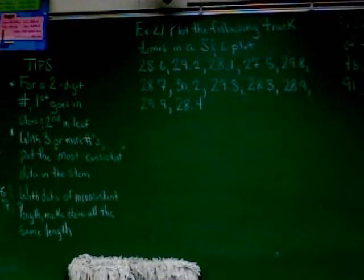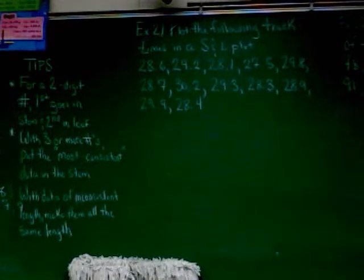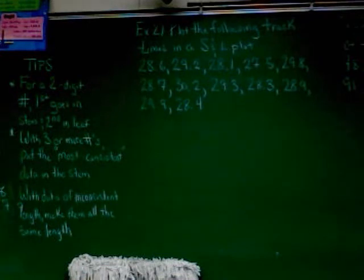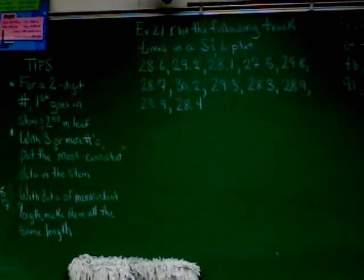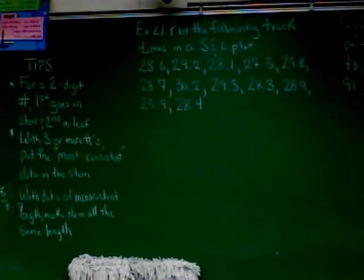With three or more numbers, we put the most consistent data in the stem. You can look at a different set of three-digit numbers and go, okay, I'm going to put the first number in the stem and the second number in the leaf. On the other hand, I might put the first two digits in the stem and the last number as the leaf. Neither is necessarily wrong, though some are easier to make than others.